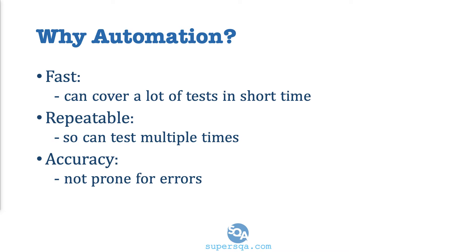You can run it multiple times a day and you need to do that. And accuracy — once you write the code and make sure it does what it's supposed to do, it's unlikely you're going to introduce errors unless you make changes to the code. But if you're manually testing, it's humans — I might do it one way this time and a different way next time, so I can actually make mistakes. These three reasons are the most important: it's fast, it's repeatable, and it's accurate.